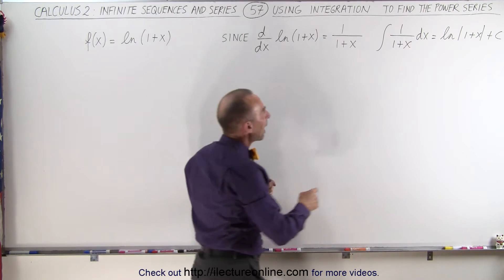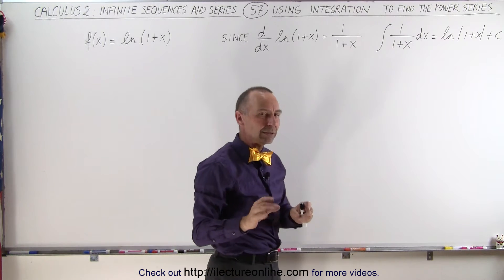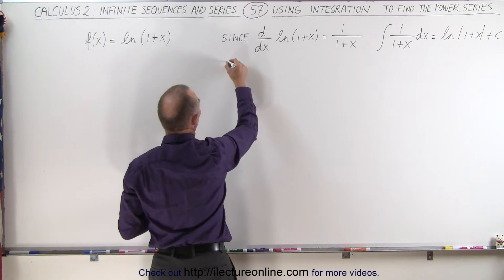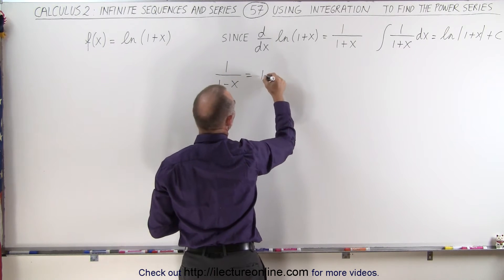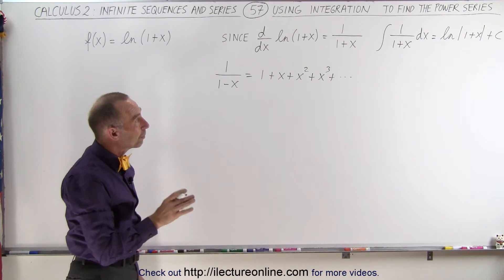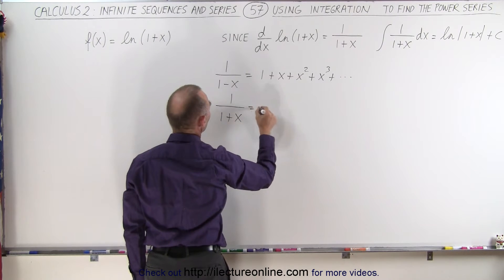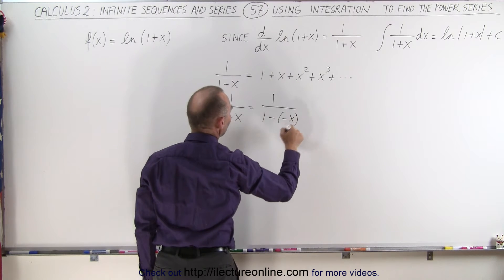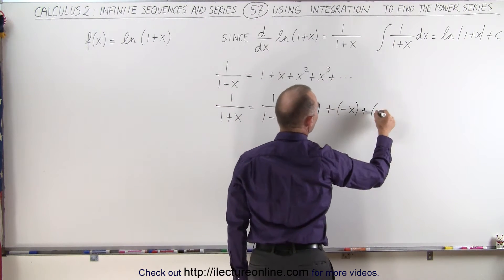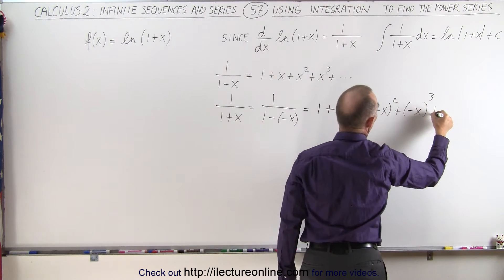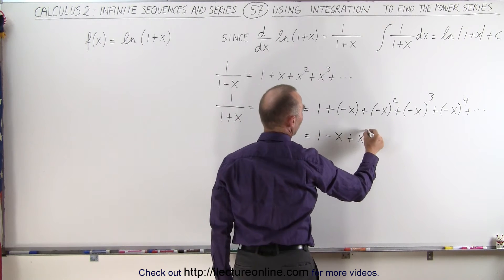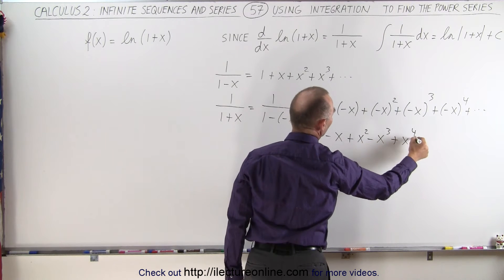This means that if we find the power series of 1 over 1 plus x, we can use the known series for 1 over 1 minus x: that equals 1 plus x plus x squared plus x cubed plus so forth. So the power series of 1 over 1 plus x can be written as 1 over 1 minus (minus x), which equals 1 minus x plus x squared minus x cubed plus x to the fourth minus and so forth.